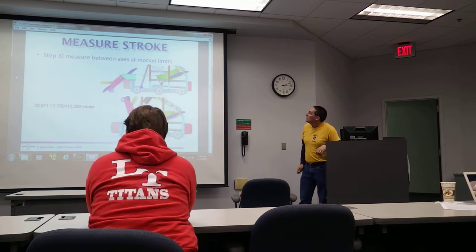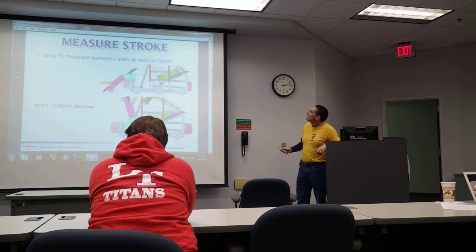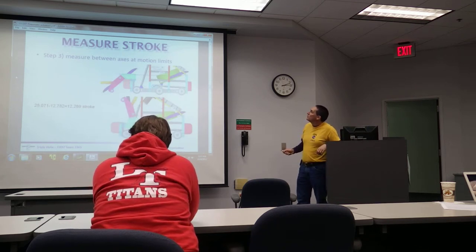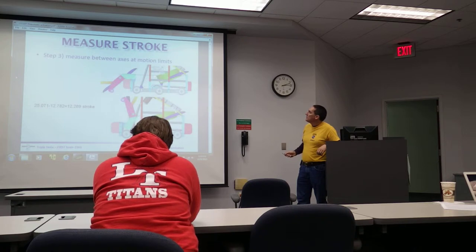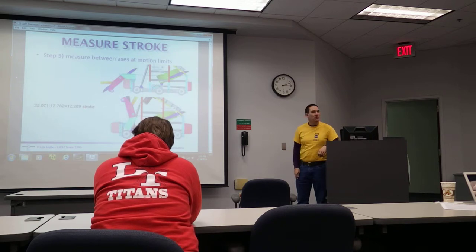What you're going to be doing is measuring between these two points to find out what's the length when it's up and what's the length when it's down. Measure when it's down, measure when it's up — you've got a distance here and a distance there. That tells you what your stroke is going to be.